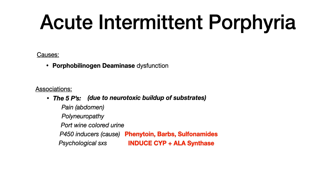The last enzyme: uroporphyrinogen decarboxylase. If that enzyme is dysfunctional, you get porphyria cutanea tarda. PCT is easy to remember because the name has 'cutanea' — so it has to do with the skin. Symptoms are hyperpigmentation, blistering, and photosensitivity. It's also associated with hepatitis C and worsened by alcohol. Treatment is phlebotomy and low-dose hydroxychloroquine. Of all the diseases, porphyria cutanea tarda is the lowest yield with the least complex associations.